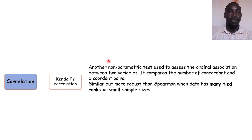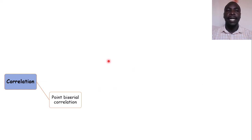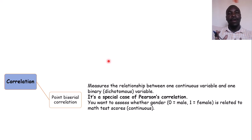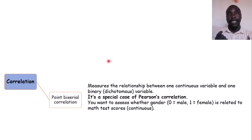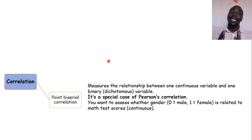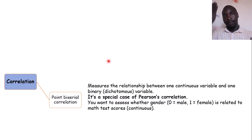We also have point-biserial correlation, which measures the relationship between one continuous variable and one binary or dichotomous variable. It is a special form of Pearson's correlation, but instead of both variables being numerical, one of them is categorical. For example, you want to assess whether gender — male or female — is related to a student's math score, which is a numerical variable. In that case, you use point-biserial correlation.